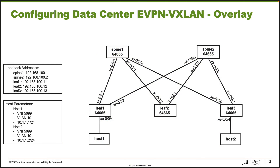Here is our topology. We have five devices we will be configuring, and then there are two hosts: host one and host two. The five switches are spine one, spine two, leaf one, leaf two, and leaf three. On the left you can see the loopback addresses for each switch: spine one is 192.168.100.1, spine two is .2, leaf one is .11, leaf two is .12, and leaf three is .13.